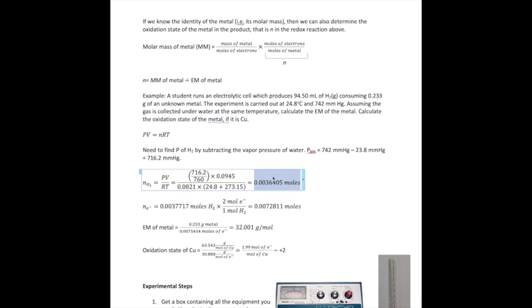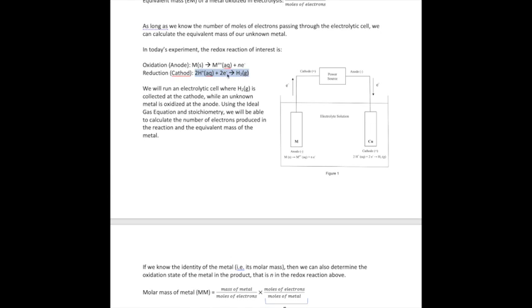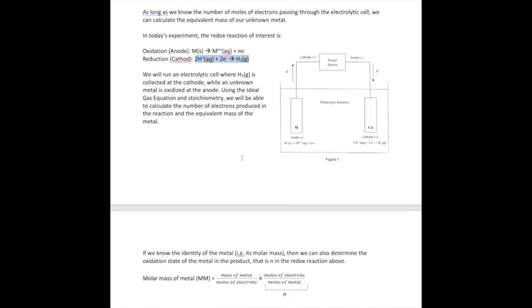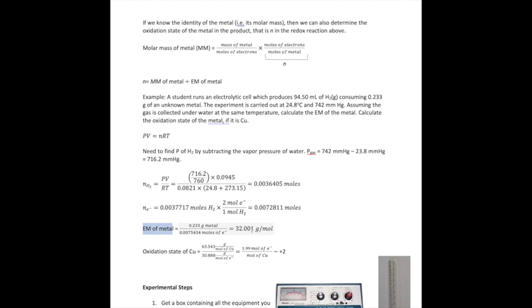Once you do that calculation, this is the number of moles of hydrogen gas that I collect. To get the number of moles of electrons, I use this reduction reaction stoichiometry, which is two electrons for every one mole of gas produced. Converting the moles of hydrogen to electrons, I get 0.0072811 moles of electron. Using that, I can calculate the equivalent mass of my metal, which is the mass of the metal divided by the moles of the electron, so I get 32.001 grams per mole. That is the equivalent mass.